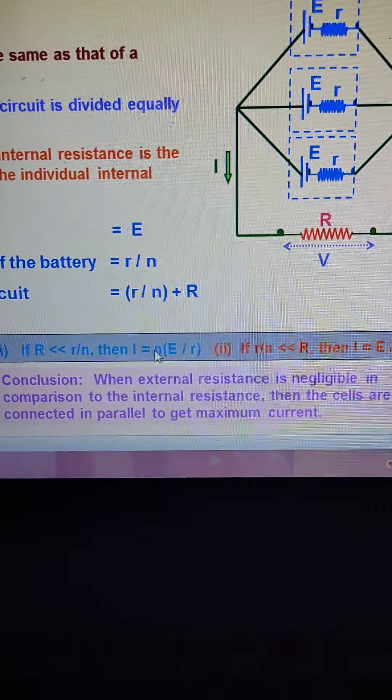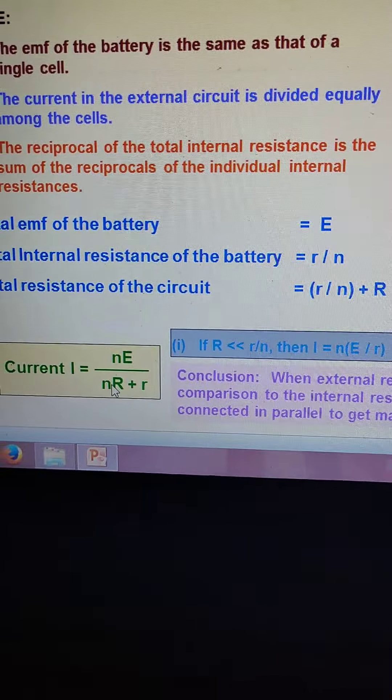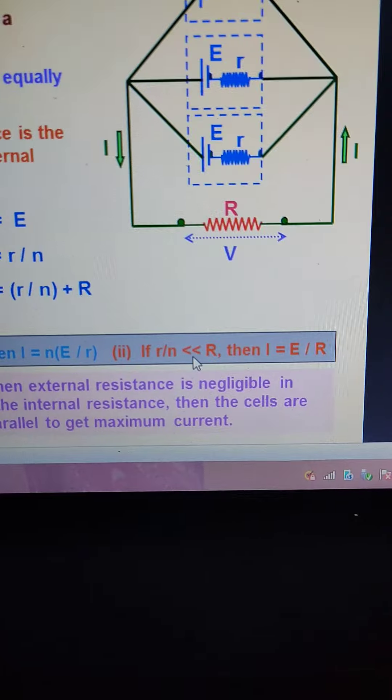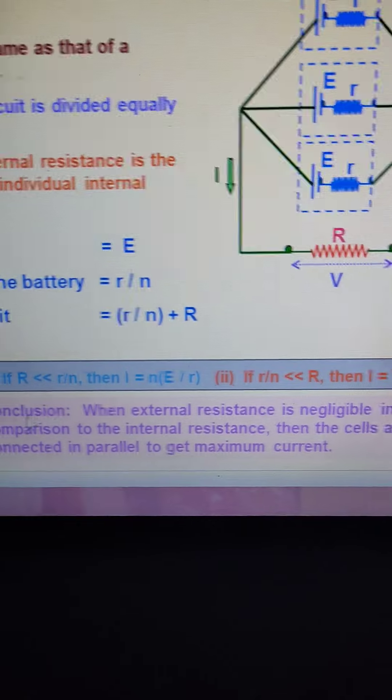n, then I is equal to nE by R, as R can be neglected in this equation. If r by n is less than capital R, then r by n can be neglected in the equation, and we will get I is equal to E by R.